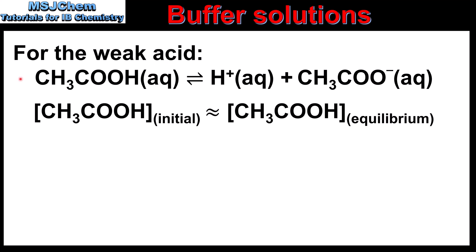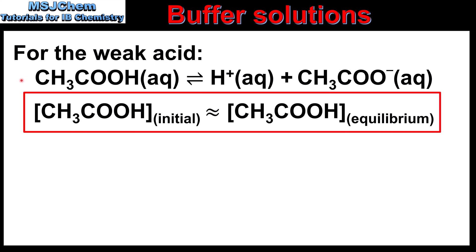For a buffer solution that has a weak acid and a conjugate base, we're going to assume that the initial concentration of the weak acid is the same as the equilibrium concentration of the weak acid. This is because the position of equilibrium for a weak acid lies to the left, so we assume that hardly any of the weak acid actually ionizes.